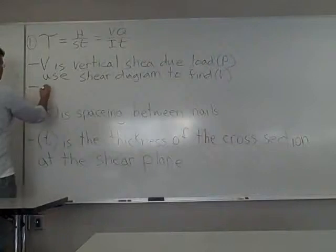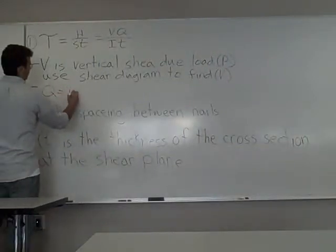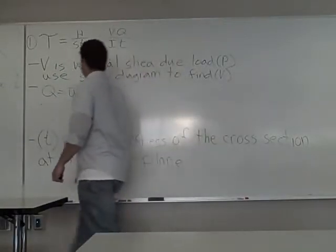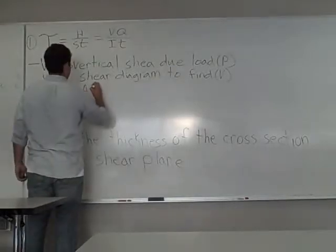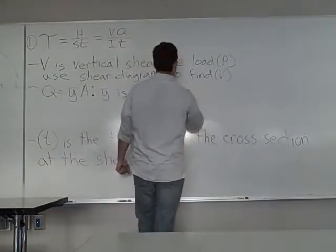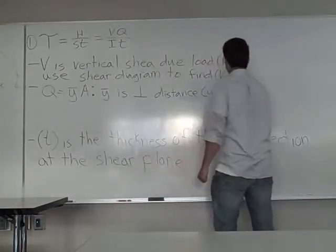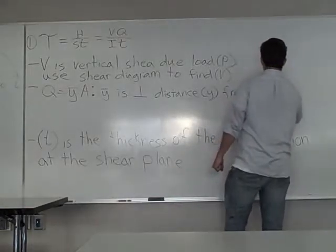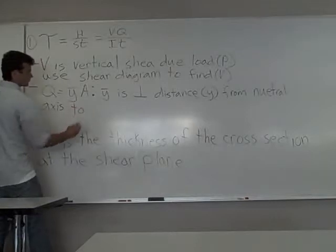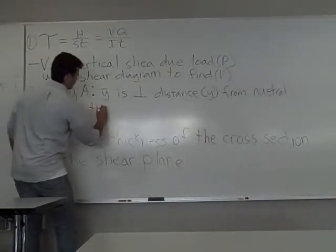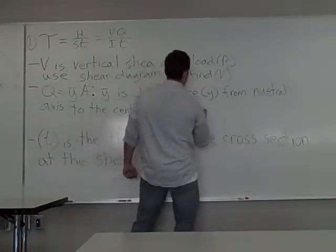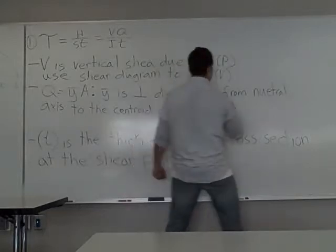And so now we have Q. Q is going to equal, this is our first moment, and recall that that equals Y bar A. And our Y bar is the perpendicular distance in the Y direction from the neutral axis to the centroid of the area above the shear plane.